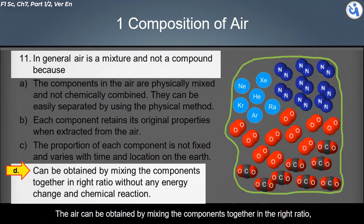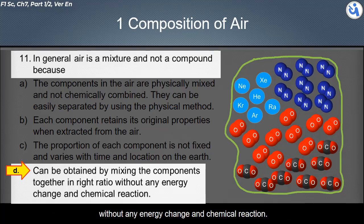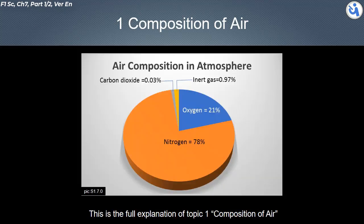The proportion of each component is not fixed and varies with time and location on Earth. Air can be obtained by mixing its components together in the right ratio without any energy or chemical reaction. This is the full explanation of topic one: composition of air.